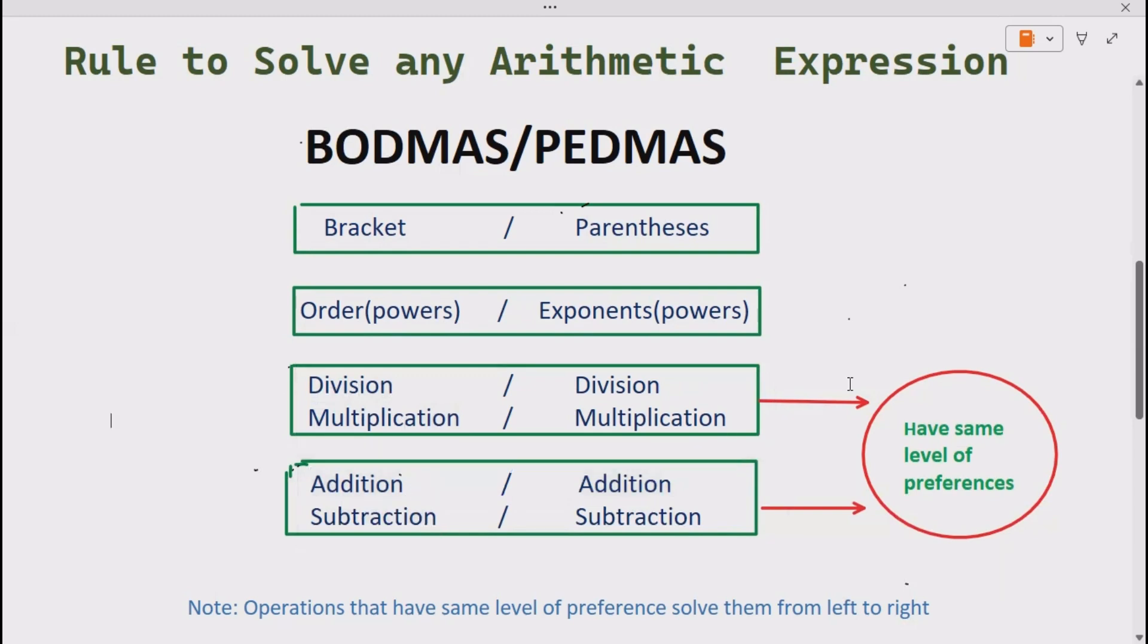Remember, division and multiplication, and addition and subtraction have the same level of preference. What does it mean? It means whenever you are solving any arithmetic expression in which both division and multiplication come at the same time, solve that operation first that comes first going